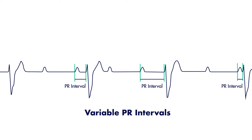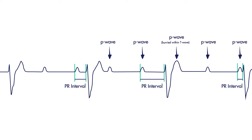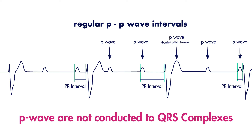In other words, the atria continue to produce action potentials like they normally would with normal sinus rhythm at regular intervals. You'd be able to march your P waves through the strip at regular intervals. The only difference is that with a complete heart block, those electrical impulses don't conduct through the AV node and to the ventricles.